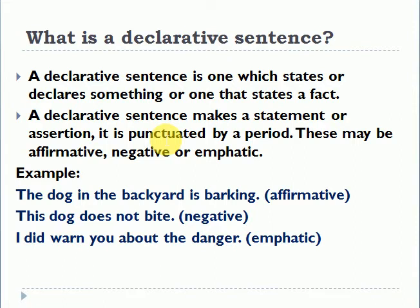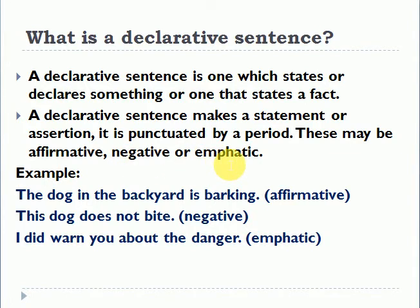First, a declarative sentence is one which states a fact, makes a statement or an assertion, and is punctuated by a period. A declarative sentence can be affirmative — stating a positive fact — negative — stating a negative fact — or emphatic — stressing or emphasizing upon a fact. For example, 'The dog in the backyard is barking' is an affirmative sentence.